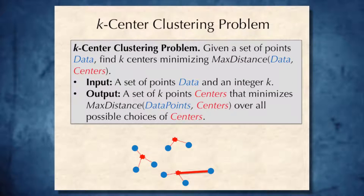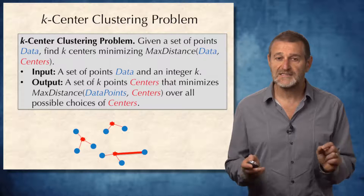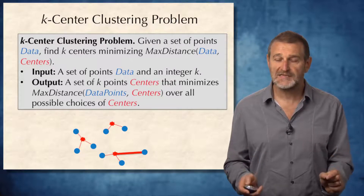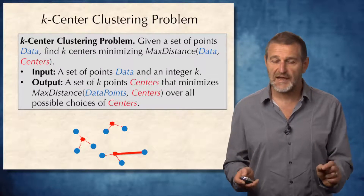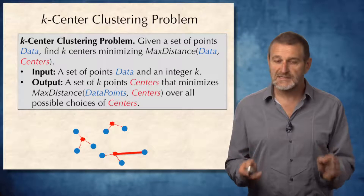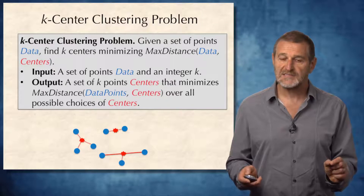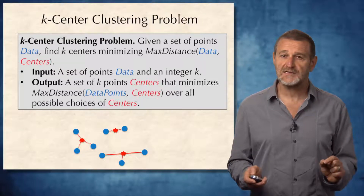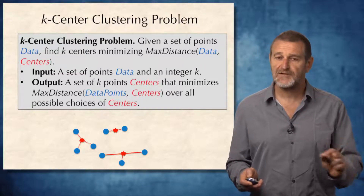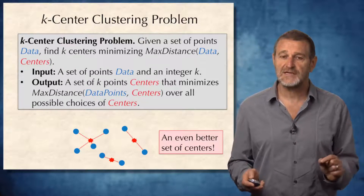After defining max-distance, we are ready to formulate the k-center clustering problem: given a set of points, find k centers minimizing the maximum distance between data and centers. The example at the bottom of this slide shows eight blue points and three centers. These three centers are very poorly chosen. A different set of centers would be a better solution, but there is yet another partition that gives an even better solution.